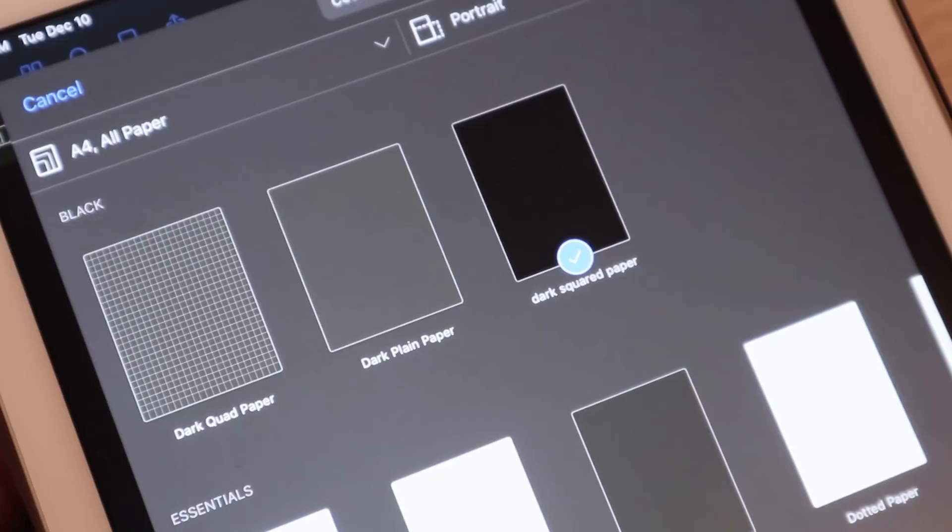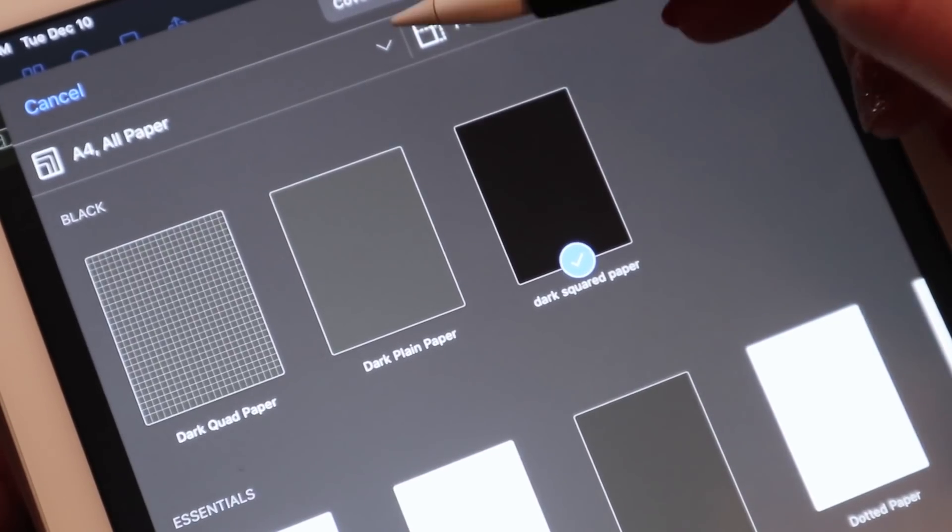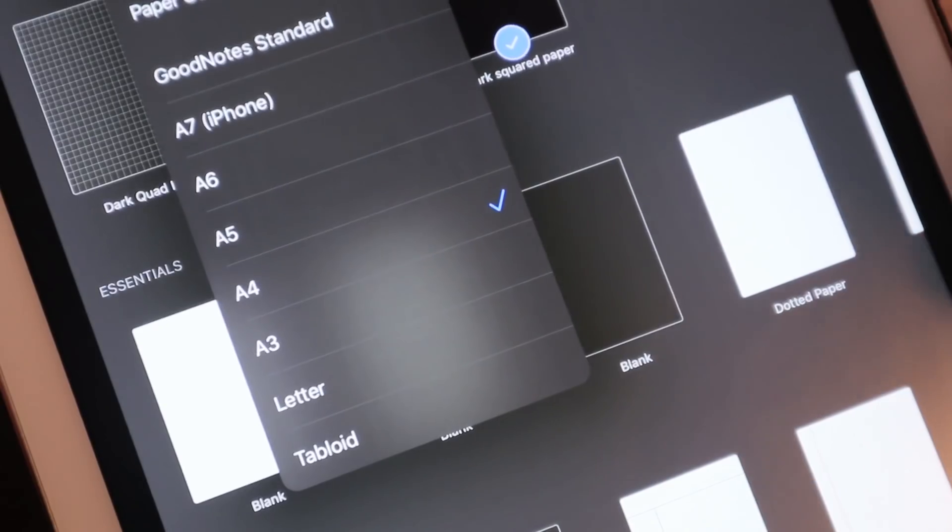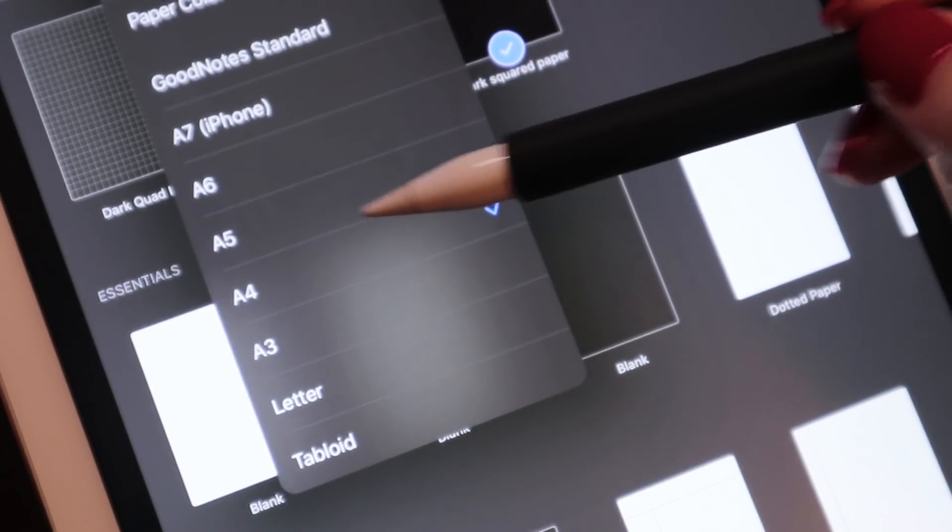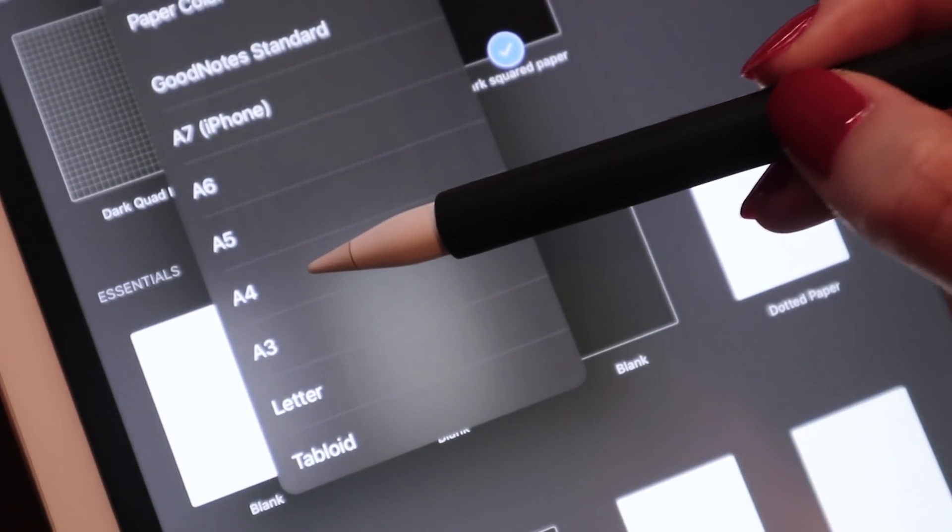In terms of the paper template, I exclusively use the A4 size that comes in GoodNotes 5. I've tried A3 as well, but I always prefer A4 because it resembles the size of a regular piece of paper the most.